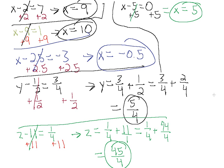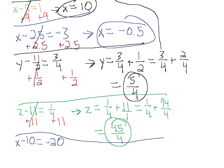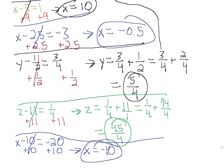Let's run through one more. Let's say we have x minus 10 equals minus 20. We just want to get our x on the left side and everything else on the right side. To get rid of this minus 10 we're going to add 10. Whatever we do on one side we have to do on the other side. Minus 10 and plus 10 cancel, leaving just x. On the right side we have minus 20 plus 10, which is minus 10. And that's our answer.